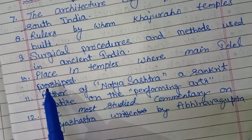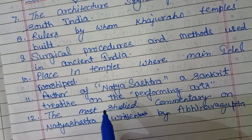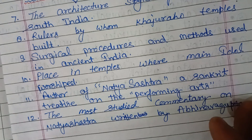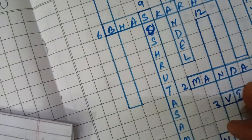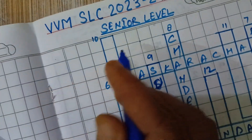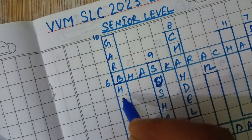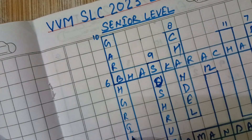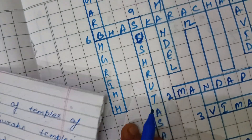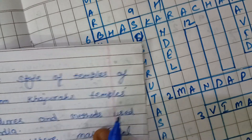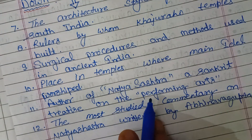Next, question ten downward: The place in temples where the main idol is worshipped is known as Garbhagriha — G-A-R-V-H G-R-I-H-A — placed at ten downward. Garbhagriha is the place where the main idol is worshipped.